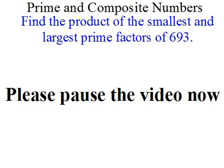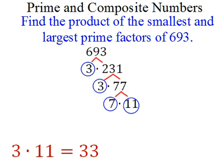All right, welcome back. Hope you've had a chance to go through this. You'll see that the smallest prime factor is 3 and the largest prime factor is 11. If we multiply these together, we get 33, which is the answer.